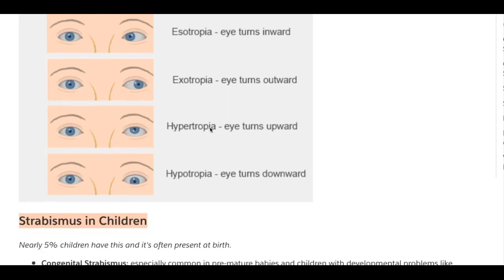Hypertropia: one or both eyes move upward — 'hyper' means up or above. Hypotropia: one or both eyes move downward to focus on the target — 'hypo' means down, under, or below. That's a hint to help you memorize these terms.